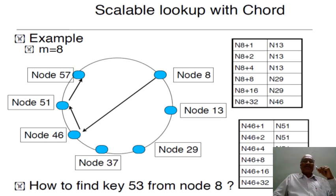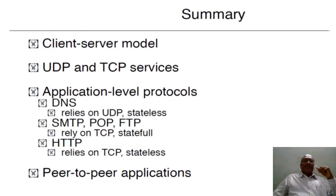By using this technique, across millions of connected devices you can minimize the number of messages needed to find a node on the P2P network. This is one of the distributed hash table techniques commonly used to retrieve files located on different computers.